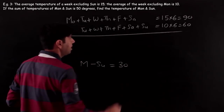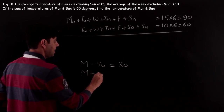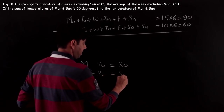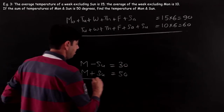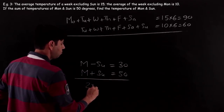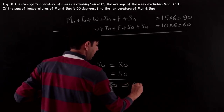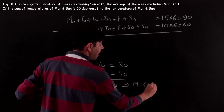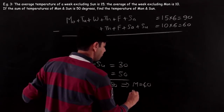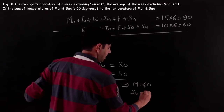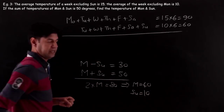We have Monday − Sunday = 30 and Monday + Sunday = 50. Adding these two equations: 2 × Monday = 80, so Monday = 40. Substituting back: Sunday = 50 − 40 = 10. Wait — Sunday = 40 − 30 = 10. So the temperature on Monday is 40 degrees and on Sunday is 10 degrees.